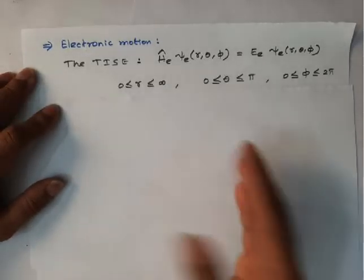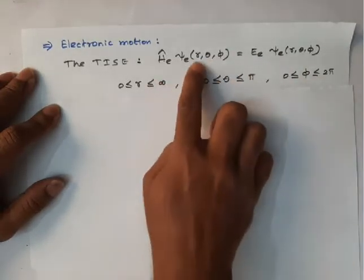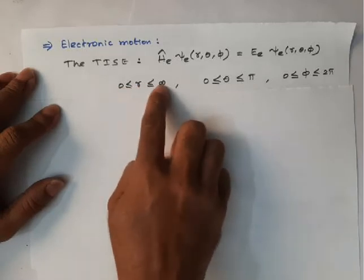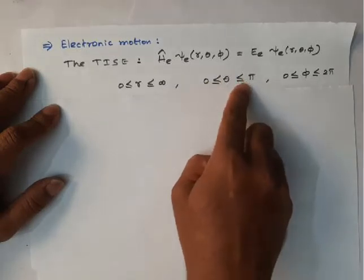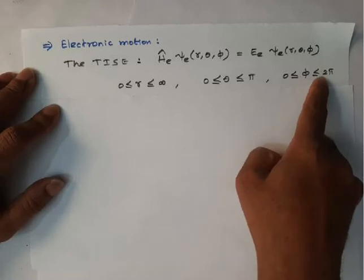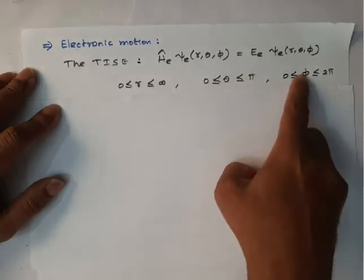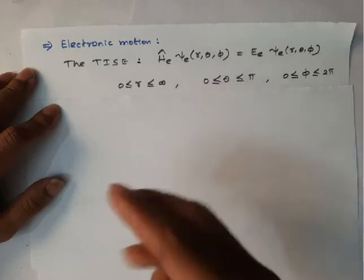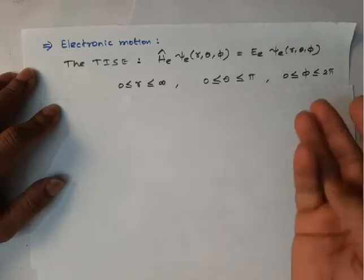Before solving the Schrödinger equation, let me give some information about the ranges. The coordinate r goes from 0 to infinity. The angle θ can take values from 0 to π, and φ ranges from 0 to 2π (360 degrees). Note: θ is called the azimuthal angle and φ is called the polar angle. The quantum number arising from θ is the azimuthal quantum number and the one from φ is the magnetic quantum number.